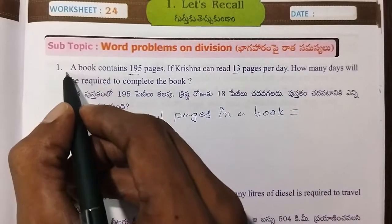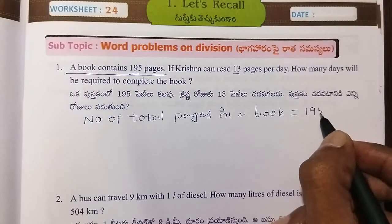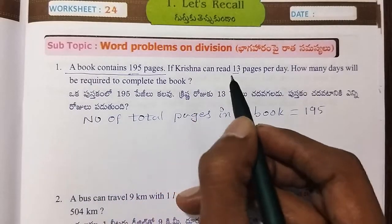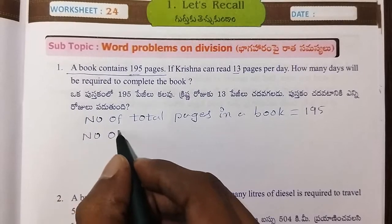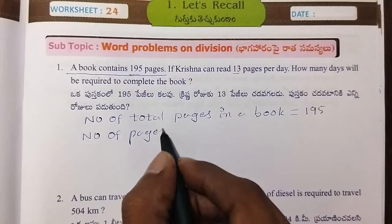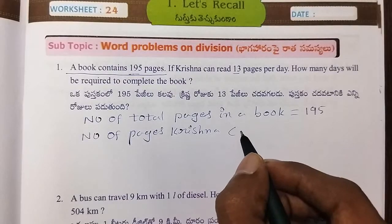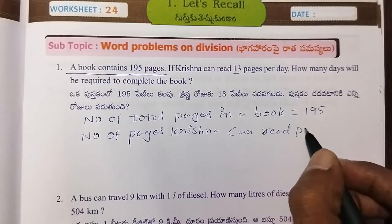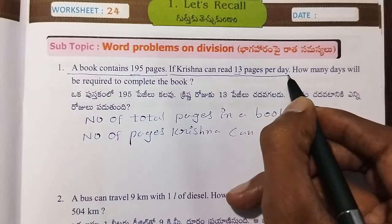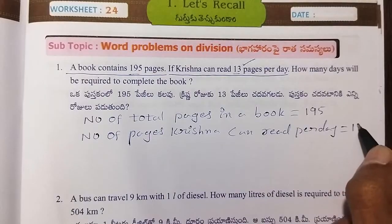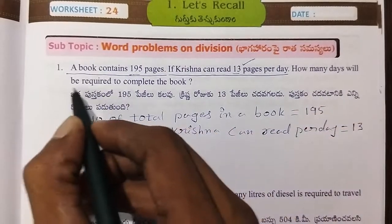Total pages in the book: 195. Number of pages Krishna can read per day: 13. If Krishna can read 13 pages per day, how many days will be required to complete the book?